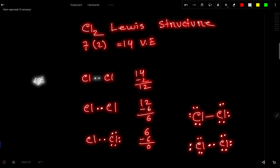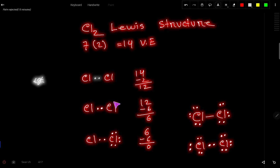Out of 14 valence electrons, we used two to form the bond, so we have 12 valence electrons left. The function of these 12 remaining valence electrons is to satisfy the octet for both chlorine atoms.